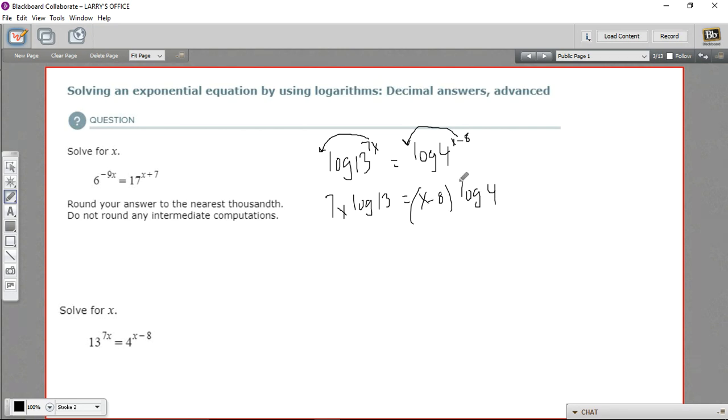Then we need to get this x out of this parentheses, so we distribute the log 4. So over here we'll get 7x times the log of 13 still. And over here we'll have x log 4 and minus 8 log 4. Now we need to rearrange the terms so that we have all the x terms on one side of the equation. So I'm going to subtract x log 4.